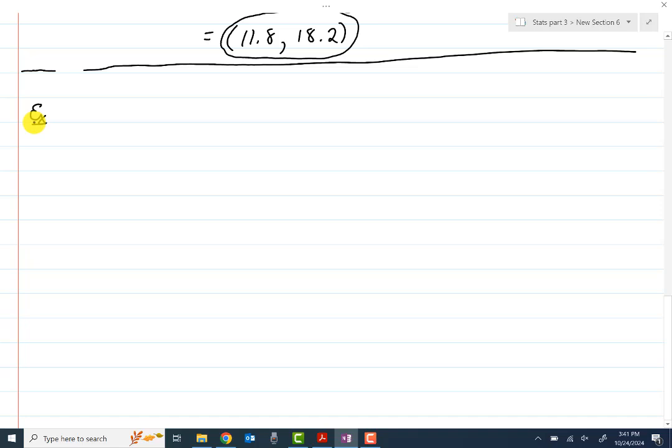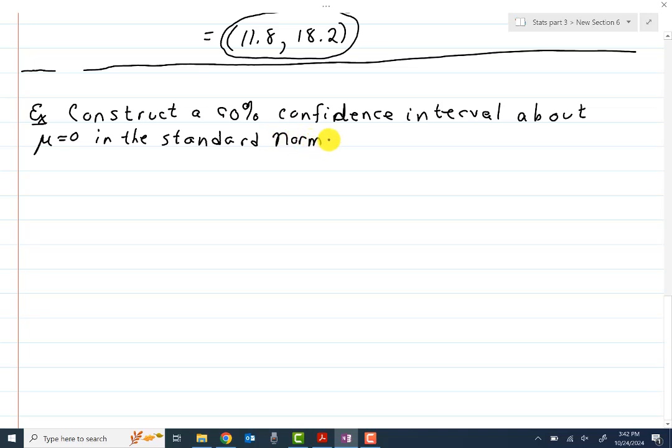Now let's see how this relates to what we're actually doing in this class. Construct a 90% confidence interval about zero in the standard normal distribution. So what we do, let me get the graph of this standard normal distribution. There's the standard one, mean zero, standard deviation one.